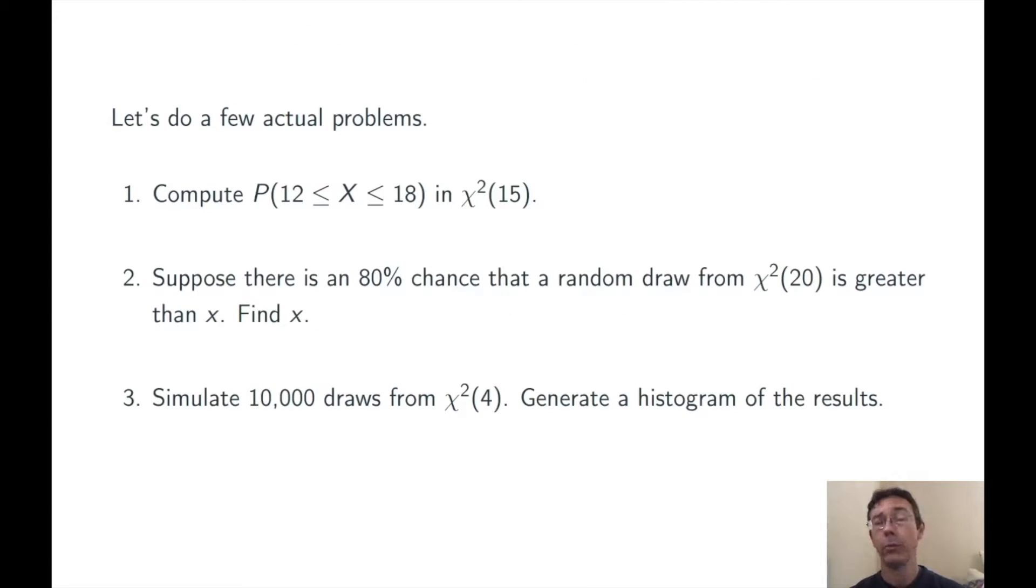All right, let's do a few actual problems. First of all, let's compute the probability of randomly getting an x value between 12 and 18 in chi-squared of 15.